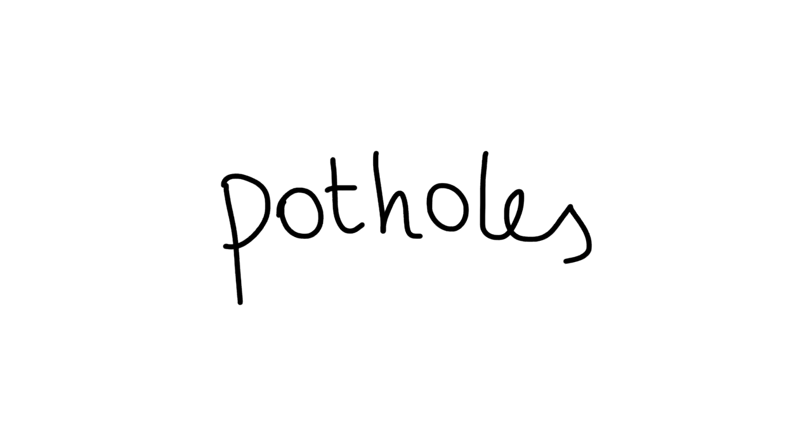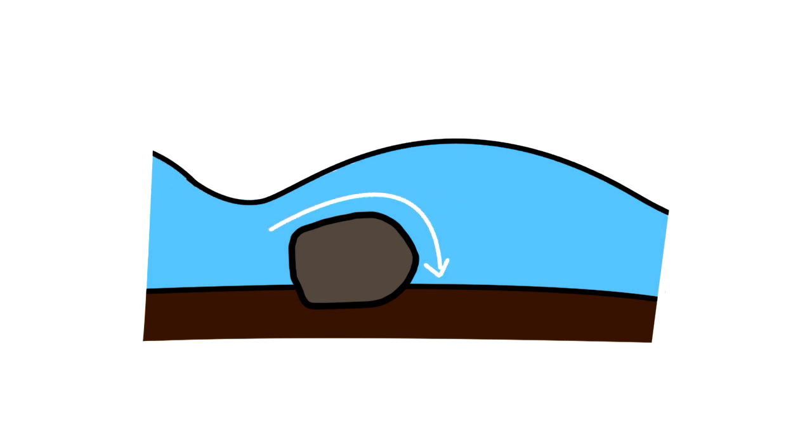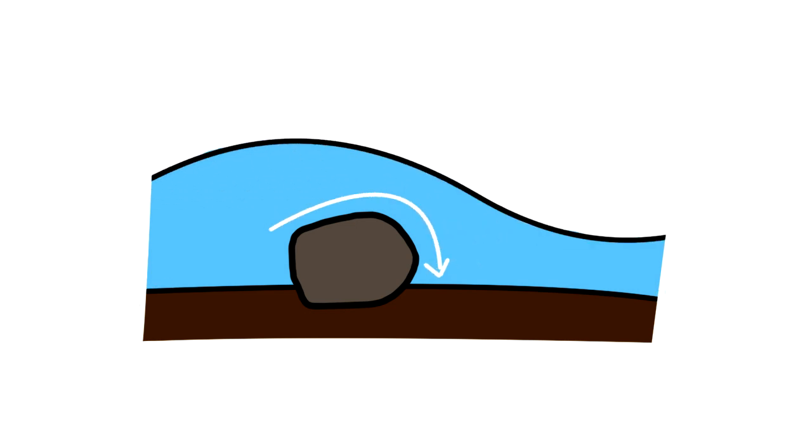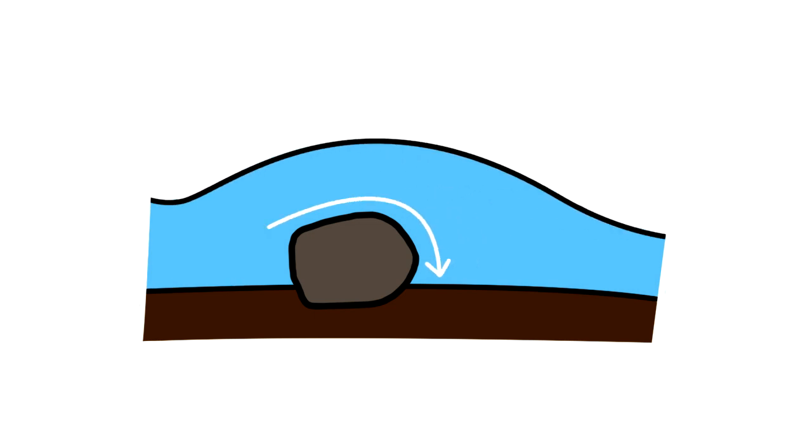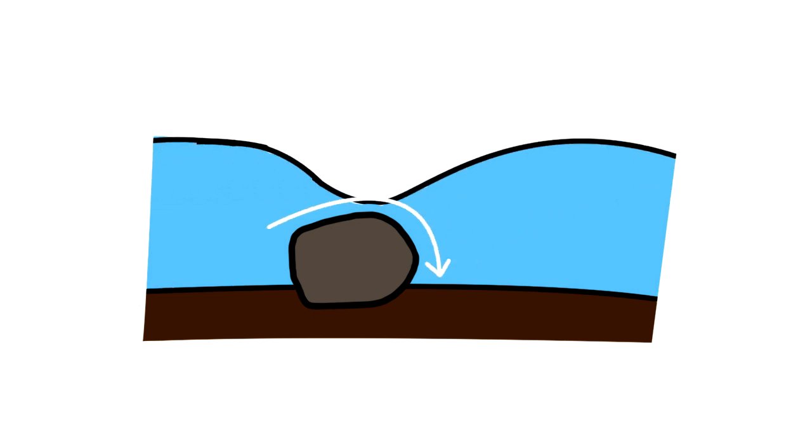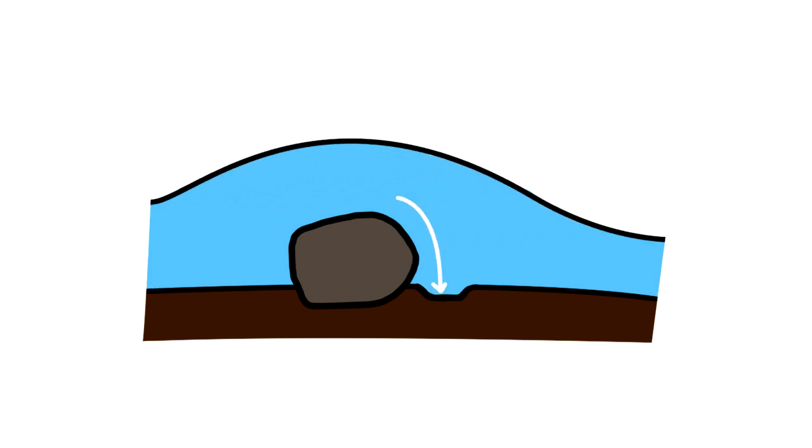Potholes can form when water meets bedload and it's forced to flow over it. The water then downcuts behind the bedload, and water turbulence moves in a circular motion called eddy currents, which erodes the riverbed and creates cylindrical holes. Pebbles can become trapped in these depressions and carry out further abrasion. As a result, the circular hollows become deeper and wider.